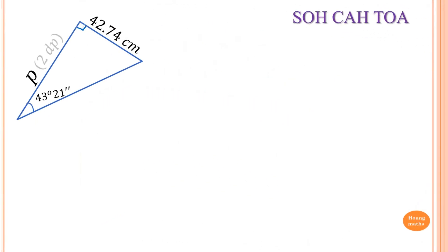Find the value of P correct to two decimal places. Angle 43 degrees 21 minutes is given, so we just need to focus on this angle. The opposite of this angle is given as 42.74 cm. We label all sides first. P is adjacent to this angle, so we label it A. Now we have O and A.